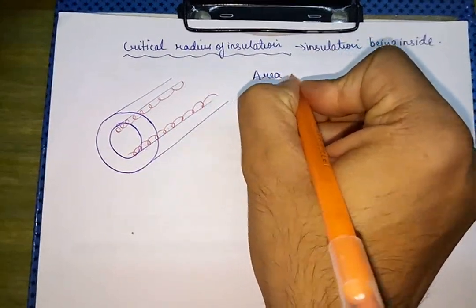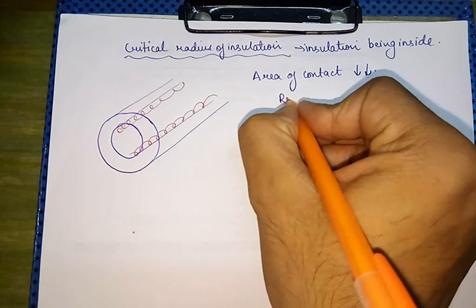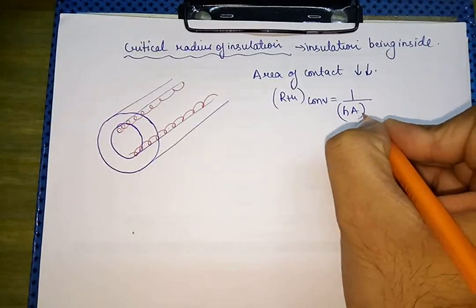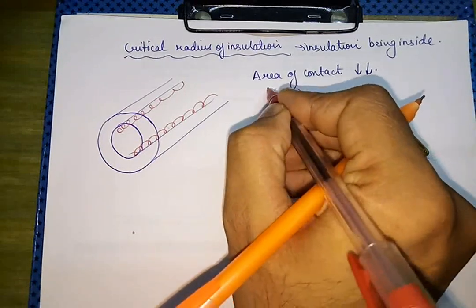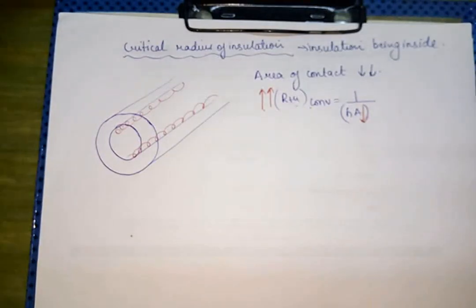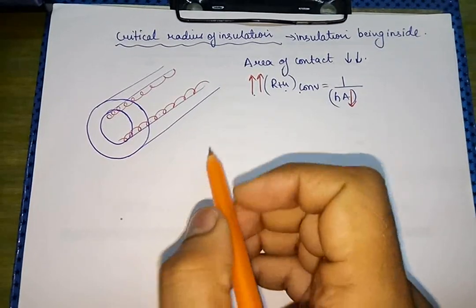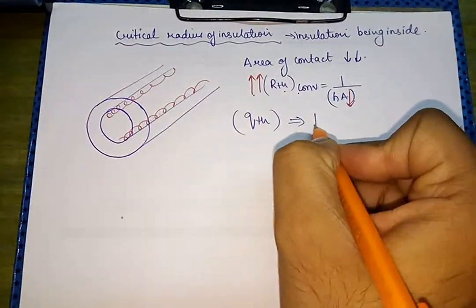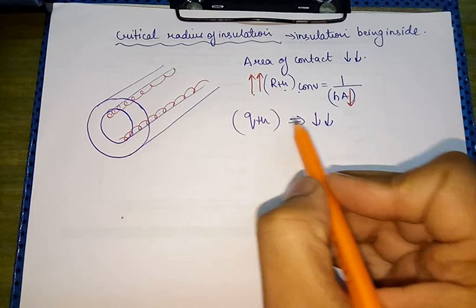Area of contact will decrease. We know that R_thermal (convection) equals 1 upon h times area. If the area is decreasing, then R_thermal (convection) will definitely increase. And if the convection resistance increases, then the heat transfer q will definitely decrease, because the resistance is drastically increasing.